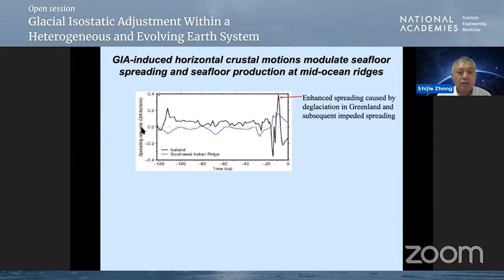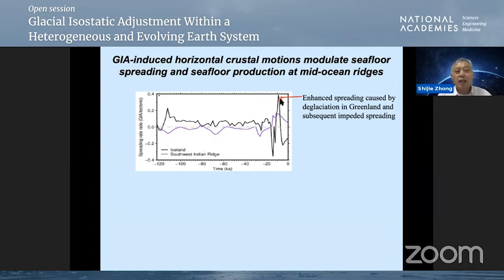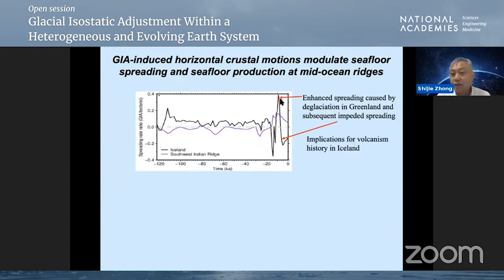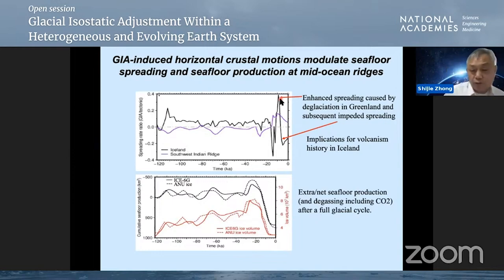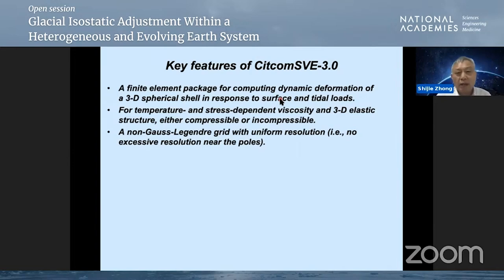Quantifying the spreading rate induced by GIA and ratioing it to the tectonic spreading rate for ultra-slow spreading centers such as Iceland and the Southwest Indian Ridge: there are times when this ratio reaches almost 40%, meaning GIA-induced spreading rate can be up to 40% of the tectonic rate. This swings time-dependently from positive to negative values. This has significant implications for the volcanic history of Iceland, and we also find that after one full glacial cycle there is a net extra seafloor production, which means additional degassing including CO2 after a full glacial cycle.